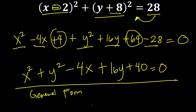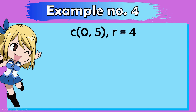Any questions so far, Grade 10? There is a comment box or discussion board after this video where you can post your questions and I can answer right away. For our last example, the coordinates of the center of the circle are located at (0, 5) and the length of the radius is 4 units. The difference in this example is that only the center and radius are given — there is no standard form yet. So what should we do first?